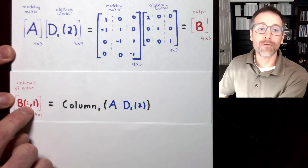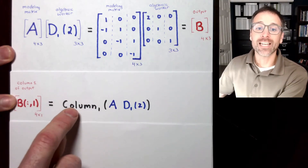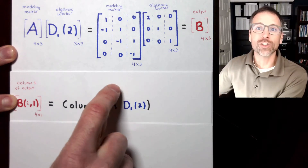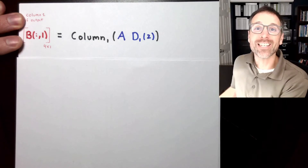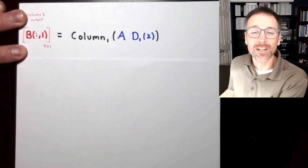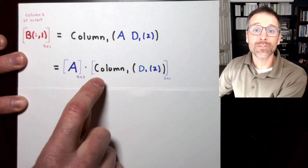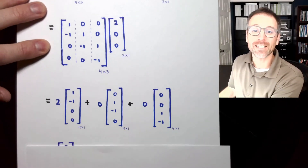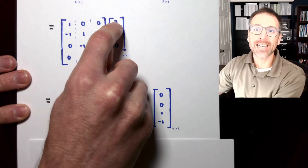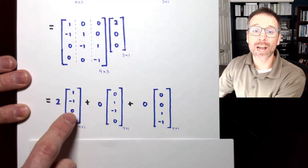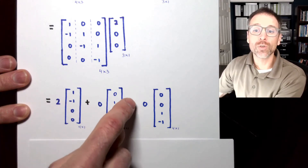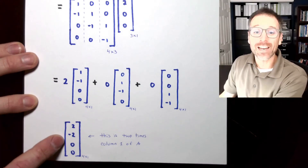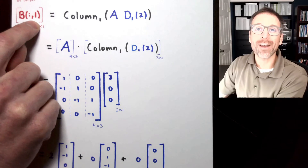Let's get practice by calculating one column at a time. We'll begin with the first column — we're trying to find the first column of the output vector B. To do that, we take column 1 of the product A times D1,2, so A times the dilation matrix with entry 2 in position (1,1). Column 1 of A times D1,2 is A times column 1 of the right-hand side matrix. Via linear combination of columns, this is 2 times column 1 plus 0 times column 2 plus 0 times column 3. The zero terms disappear, and we're left with just 2 times column 1 — we've doubled column 1.